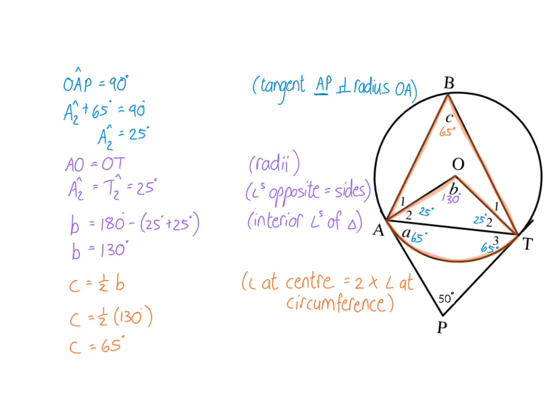If you've noticed that angle A and angle C both worked out to be 65°, you've already identified Theorem 9, which we'll cover in the next video.